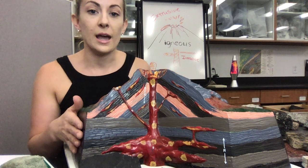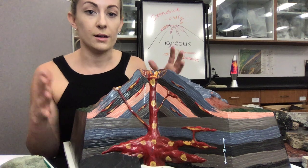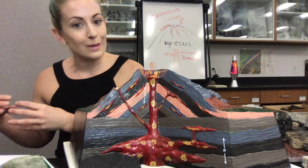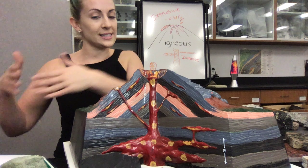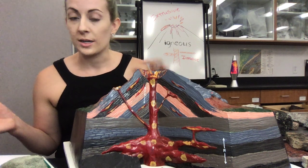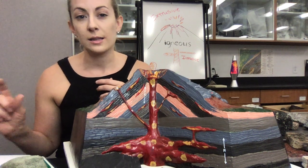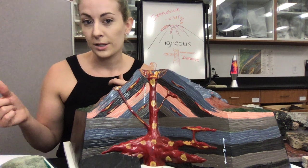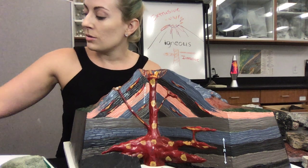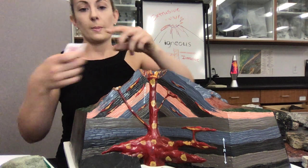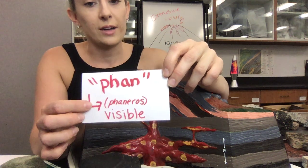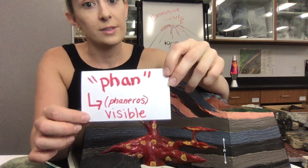Within this subcategory of igneous rocks, we have even more subcategories. We go from igneous to intrusive, and now we have two categories that rely on a little bit of knowledge of Greek nomenclature. There is a root word that is 'phan,' which comes from the Greek word 'phaneros,' meaning visible.